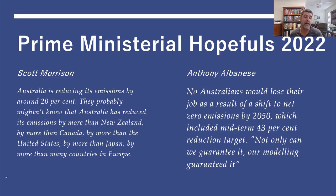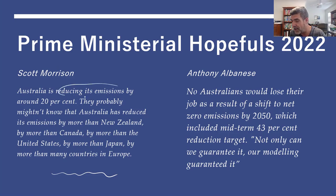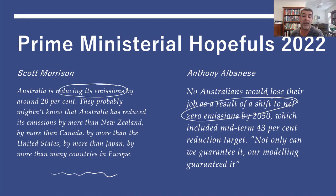Scott Morrison suggested that Australia was reducing its emissions by around 20 percent, and that the reductions Australia was making were greater than those of New Zealand, Canada, the United States, Japan, and many countries in Europe. Anthony Albanese has also spoken about climate change, saying that no Australian would lose their job as a result of a shift to net zero emissions by 2050, which included a midterm 43 percent reduction target — 'Not only can we guarantee it, our modelling guaranteed it.' This gives a small comparison in terms of emission reductions, a shift to net zero, and some of the consequences associated with that.